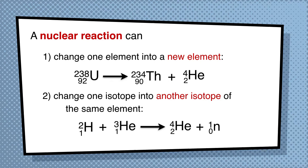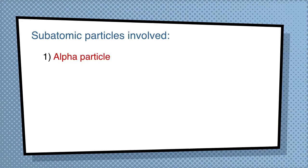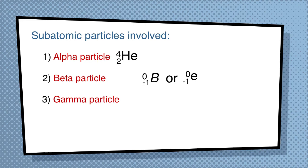Some of the subatomic particles involved are going to be either an alpha particle, written as 4, 2, He. A beta particle, written as 0, negative 1, beta (or 0, negative 1, E). Essentially, a beta particle is an electron.